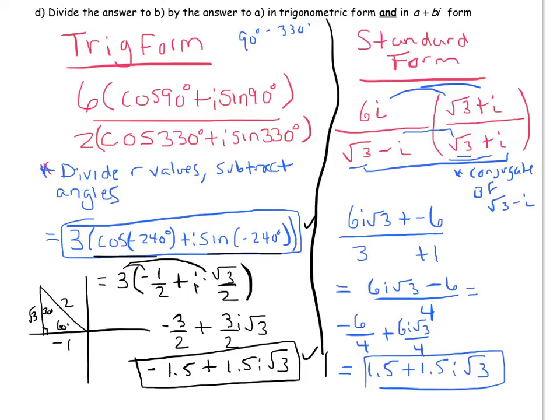So, of course, we get the same answer as we did over here. But I don't know about you, I think that trig form is a little bit nicer to work with, especially if we're not asked to put our answer in standard form. Because it's so simple, you just divide those R values and subtract the angles. And trig form is just much more useful.